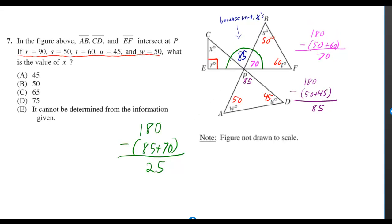Then I have a straight line, so that must be 180 degrees. And if I subtract 85 and 70, I'm only left with 25 degrees.